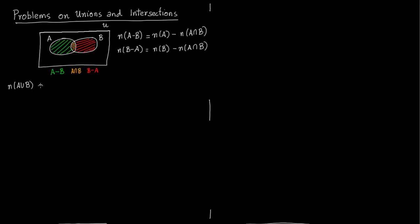Number of elements in A union B is: number in A minus B, plus number in A intersection B, plus number of elements in B minus A. This is because A union B is a disjoint union of three sets — A minus B, A intersection B, and B minus A. All three of them are disjoint.